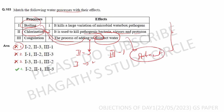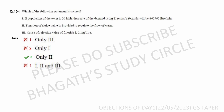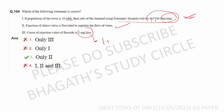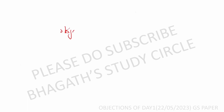Next: if the population of a town is 20 lakhs, the rate of demand using Freeman's formula gives 4,65,760 liters per minute — that is the correct answer. Function of sluice valve is to regulate flow of water — correct. Cause of rejection: value of fluoride is 1.5 ppm, not 2 mg/L. Options one and two are correct. Objection raised for this question as well.